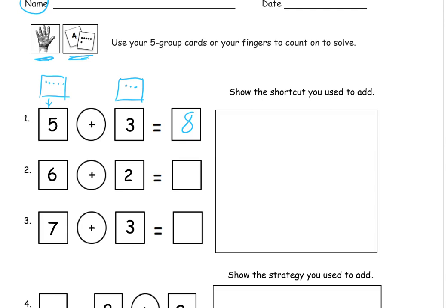And if you're using your fingers, then you're going to start with five fingers and then count up six, seven, eight to get eight.